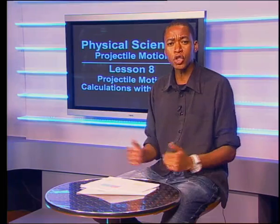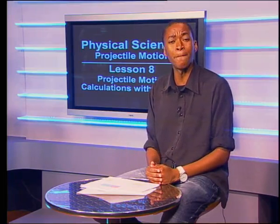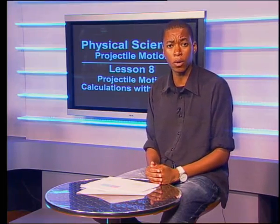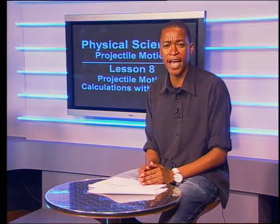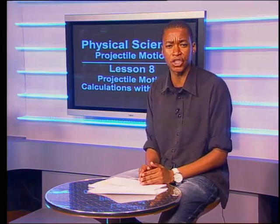These graphs could represent the motion of a bouncing ball. The graphs show the ball bouncing three times. Each time it bounces it reaches a lower maximum height because the ball loses some of its mechanical energy. This energy moves to the environment in the forms of heat and sound energy.